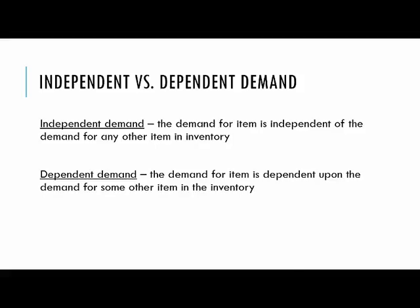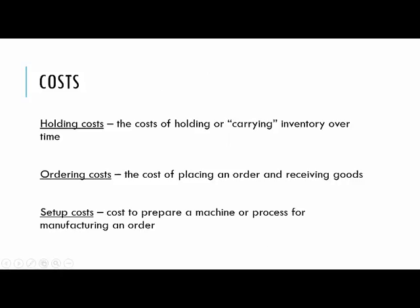We're also interested in the costs associated with inventory. There's holding cost, ordering cost, and setup cost. Holding cost is the cost of carrying inventory over time until the next time period. Ordering cost is the cost of placing an order and receiving goods. Setup cost applies more in manufacturing settings — preparing a machine or process for an order. In the models we look at, we're going to lump ordering and setup costs together and call them setup cost.